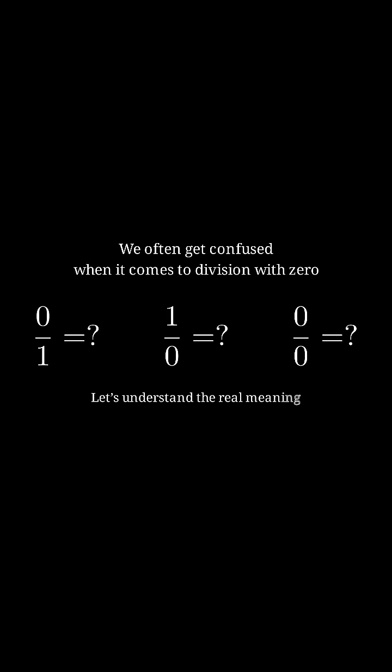Let's understand the real meaning of division in the simplest way. Take an example, 15 by 3. This means how many times should we add 3 to make 15? 5 times. So 15 by 3 equals 5.